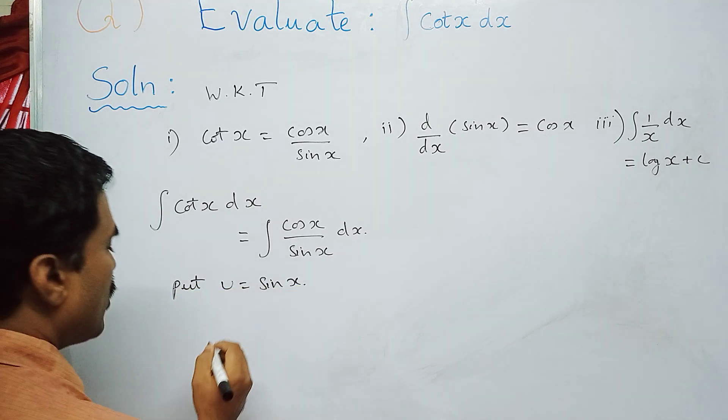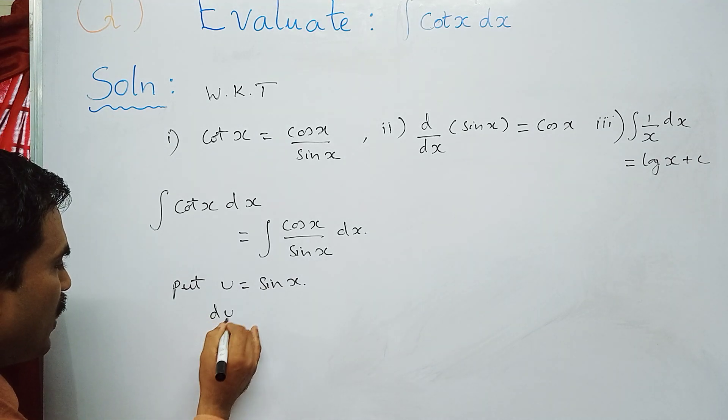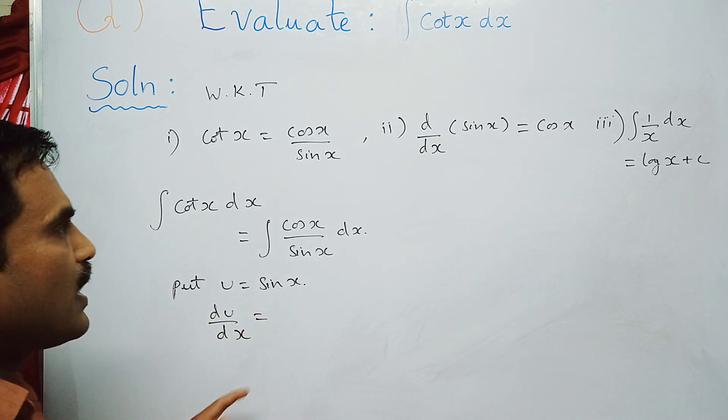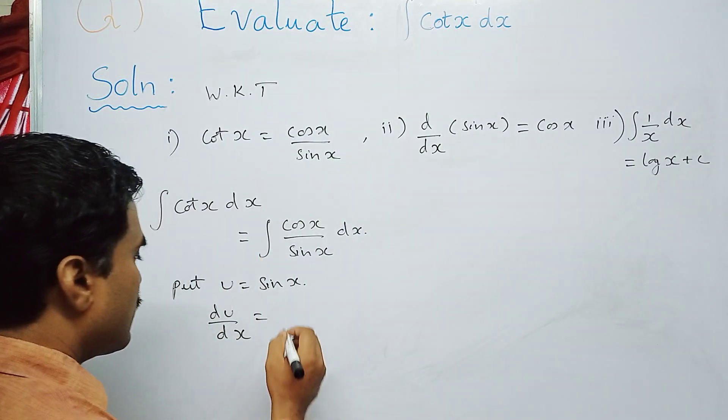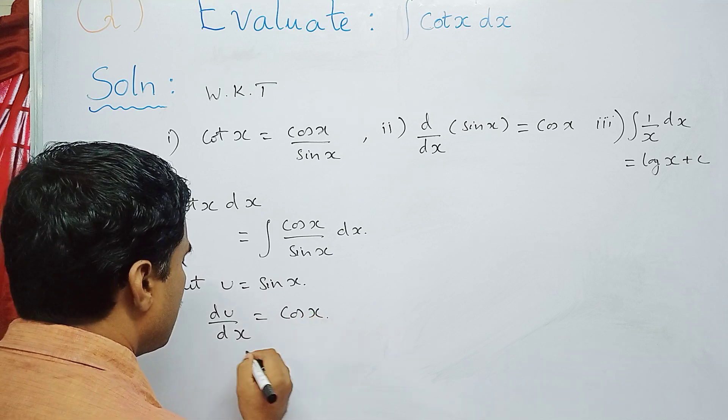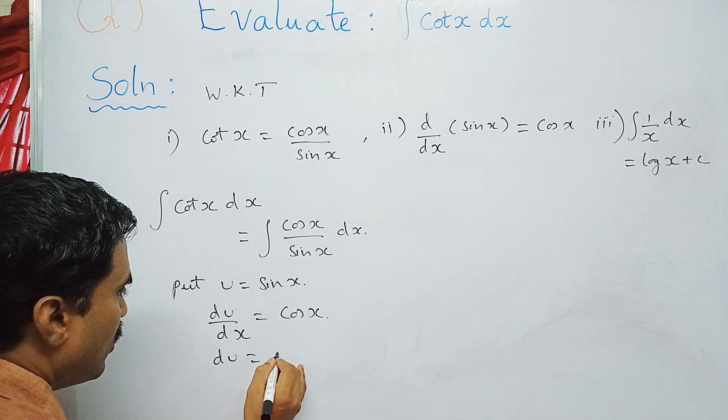So just take this dx to that side, so you can write du = cos x dx.